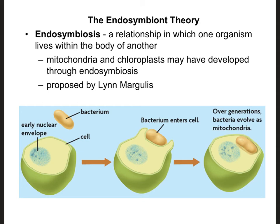They help us by digesting our food, and we help them by giving them a nice warm place to live. This endosymbiont theory came from a woman named Lynn Margulis, in the 1970s. She was actually married at one point to a man named Carl Sagan — you might know him as the predecessor to Neil deGrasse Tyson on the show Cosmos. He's a really famous physicist and astronomer. Very smart couple.